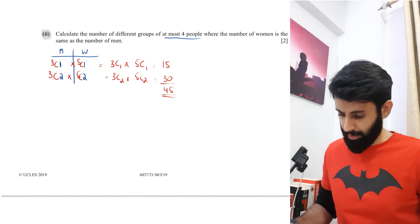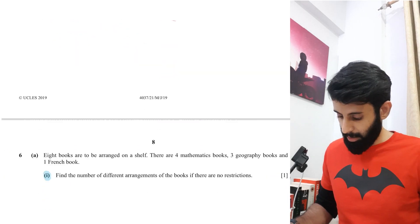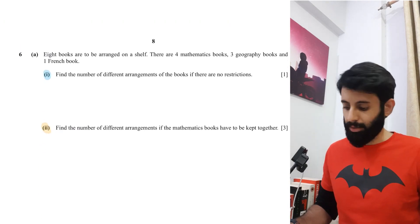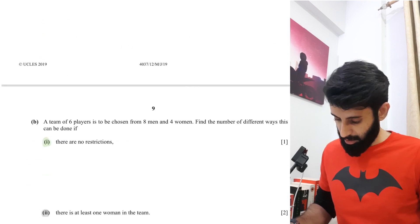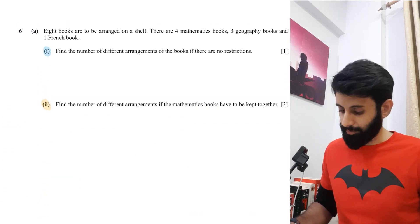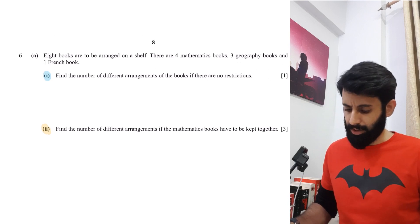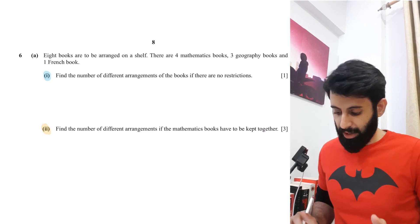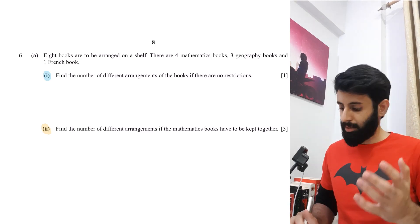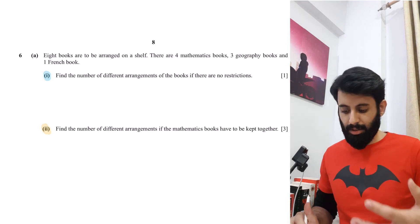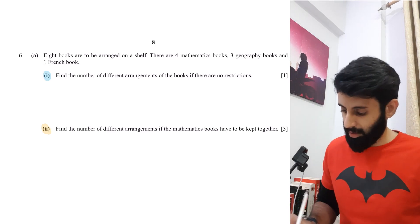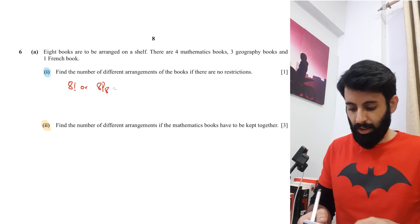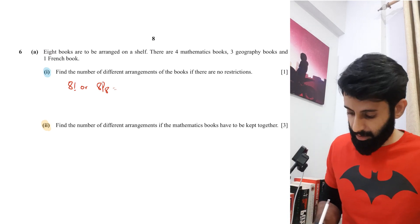That question was from Mageman 2019, Paper 2, Variant 1. We now move on to another question from Mageman 2019, Paper 1, Variant 2. Eight books are to be arranged on a shelf: there are 4 mathematics books, 3 geography books, and 1 French book. Find the number of different arrangements if there are no restrictions — so that's 8 factorial, which equals 40,320.